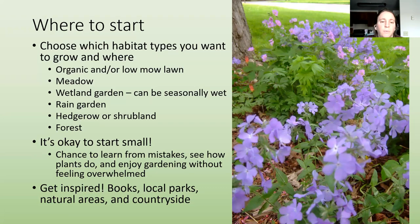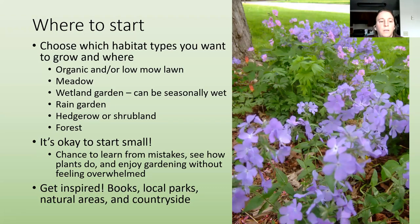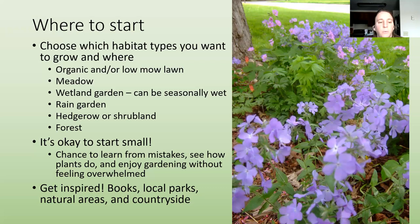If you want to have an organic or low-mow lawn in some places, or where you want meadow, a wetland garden, or a rain garden — wetland gardens are places that are just naturally wet in the yard, while a rain garden is a place that's normally dry but you're making wet to capture roof runoff and things like that — and hedgerows, shrublands, and forests.